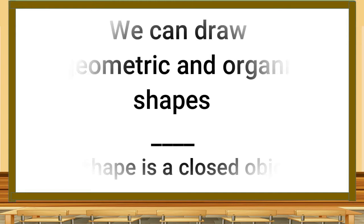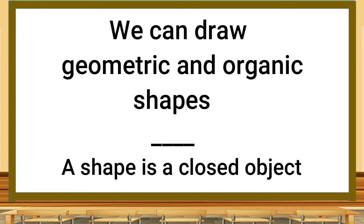Hello, today we're going to talk about geometric and organic shapes. We learned back in first grade and kindergarten that a shape is a closed object. There's a difference between shapes and lines - your lines have to connect to make a shape. Now we're going to learn how we can group shapes into two different families: geometric shapes and organic shapes.